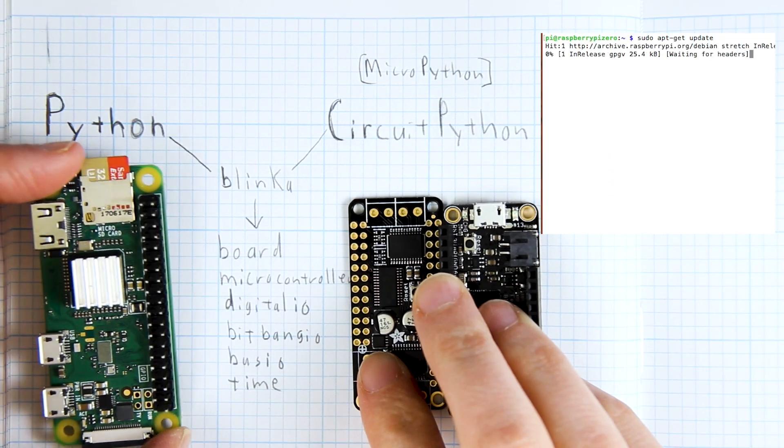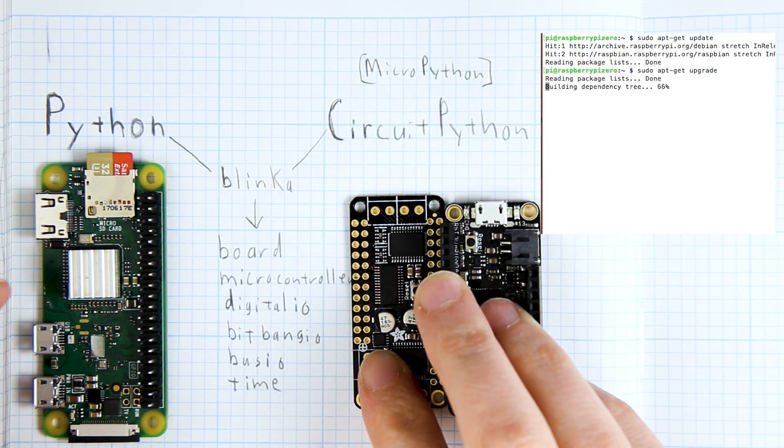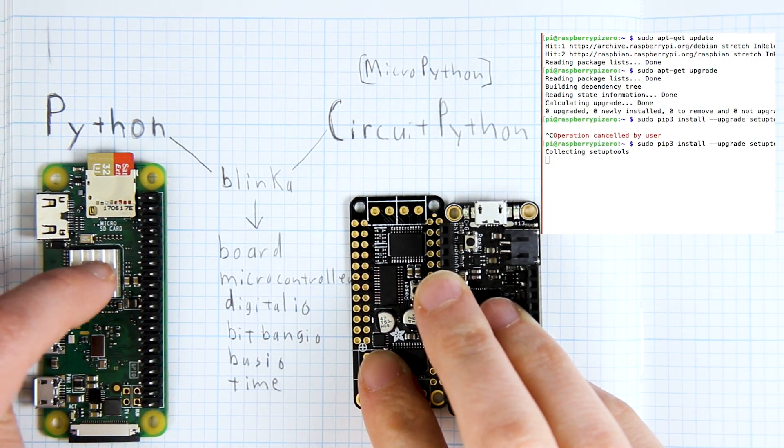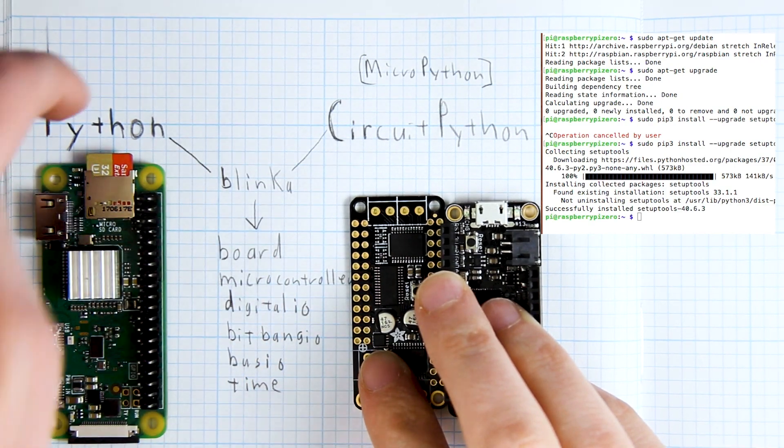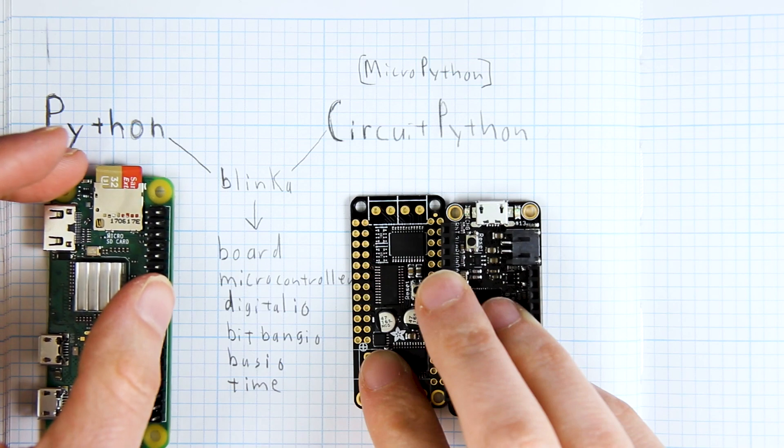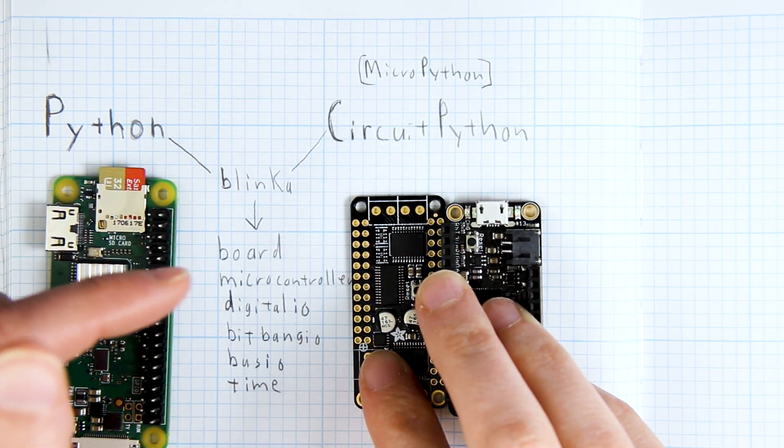First we want to make sure that our software is up to date on a Raspberry Pi. And then we're going to install tools for PIP3. PIP is a way to install libraries onto your Raspberry Pi and PIP3 means we're using Python 3. And that's the version of Python that works with CircuitPython and MicroPython. If you ever have problems installing libraries you just do sudo pip3.